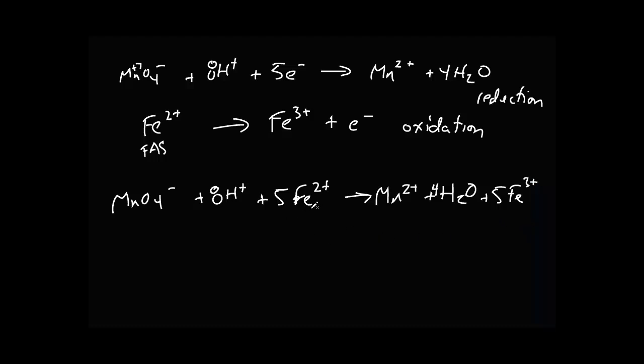So this is our combination of these two half-reactions, and since each iron supplies one electron, we need five, so we need five irons. These five electrons from the iron are going to reduce the Mn+7 to the Mn2+ on the right with the formation of four waters.